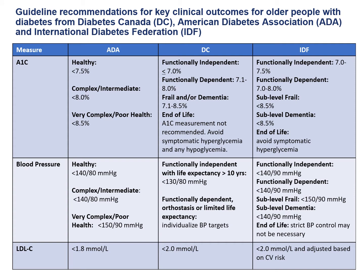This slide compares guideline recommendations from Diabetes Canada, the American Diabetes Association, and the International Diabetes Federation. The glycemic targets are very similar, except that Diabetes Canada recommends an A1c target for functionally independent patients of less than 7%, whereas the ADA and IDF recommend less than 7.5%. Blood pressure targets also differ: Diabetes Canada recommends a systolic target of less than 130 for functionally independent patients with a life expectancy greater than 10 years. For functionally dependent patients with orthostasis or limited life expectancy, blood pressure targets are individualized, and lipid targets are very similar between the three groups.